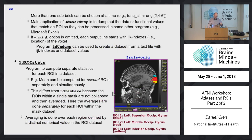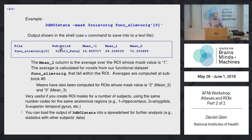A similar program to 3D Maskave is 3D ROI Stats. While 3D Maskave gives you one result for one mask, 3D ROI Stats separately handles each ROI. So if your ROI data set has values of 1, 2, and 3, it will give you the mean across each of those regions separately. Applied to a whole time series, it would give three columns — one per region.